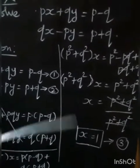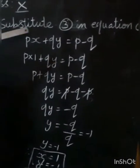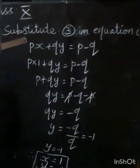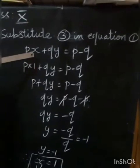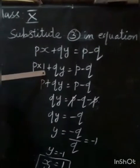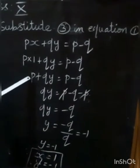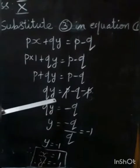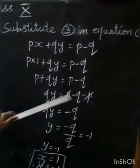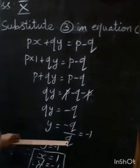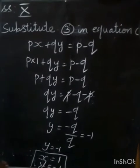X equals 1. Substituting into the first equation: PX plus QY equals P minus Q. P into 1 plus QY equals P minus Q. So QY equals P minus Q minus P, which gives QY equals minus Q. Dividing by Q: Y equals minus 1. Therefore X equals 1 and Y equals minus 1.